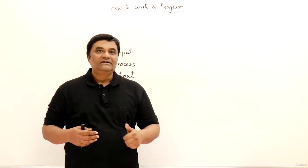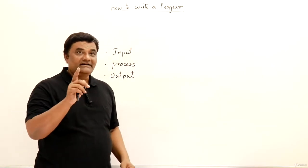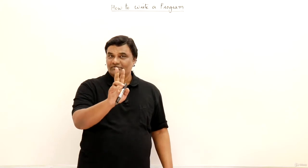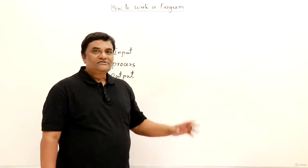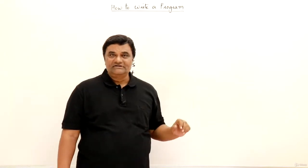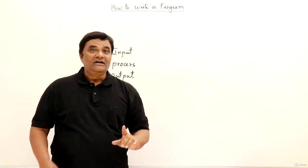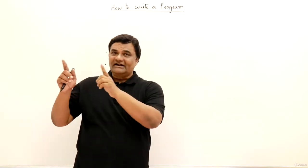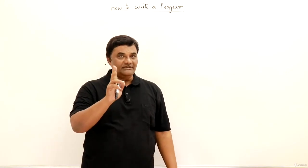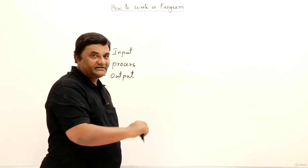Now let us see how we can follow these steps for writing a simple program for adding two numbers. First of all, I will draw a flowchart for this one, then I will write an algorithm using pseudocode, then I will write down a C++ program for adding two numbers.